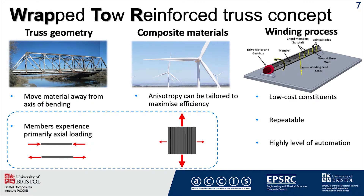Composite trusses aren't really anything new though. What's special about this technology is the manufacturing process. It's very similar to filament winding, and being similar to filament winding we get a lot of the same benefits: we can use low cost constituents, it's repeatable, and you get a high level of automation.